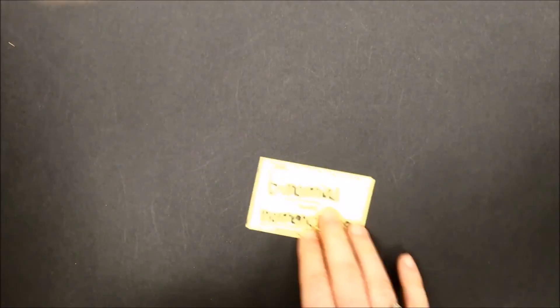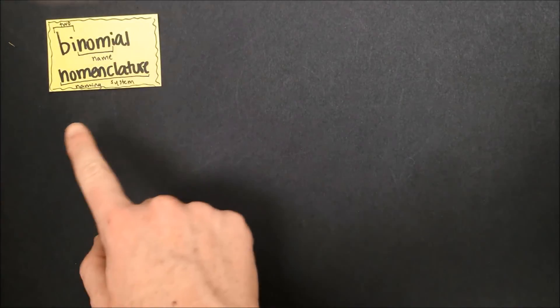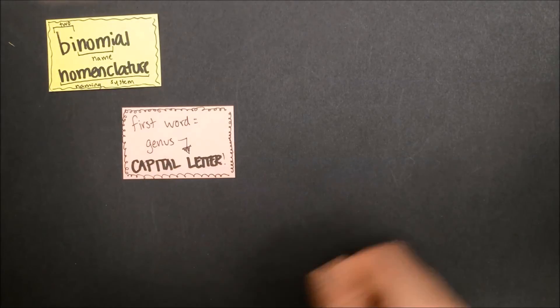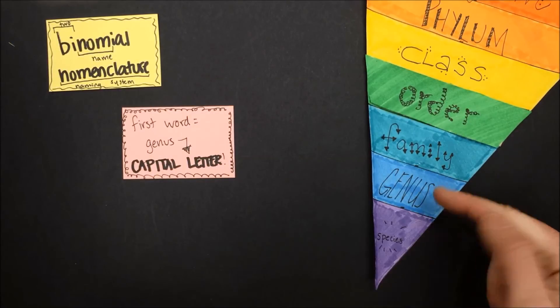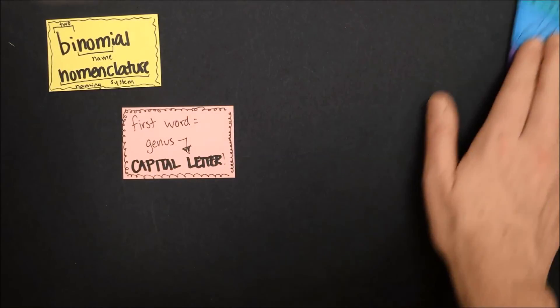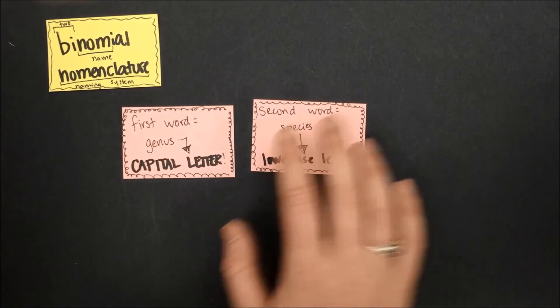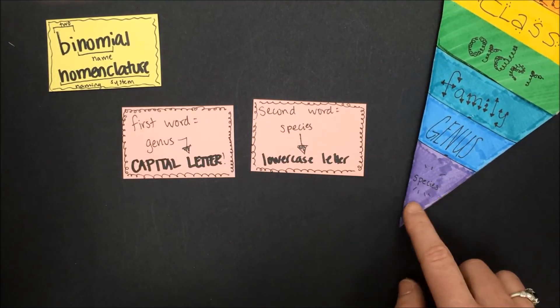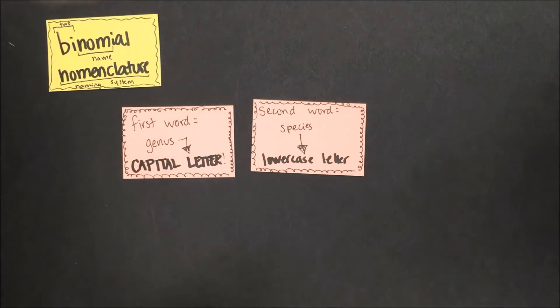In our system of binomial nomenclature, which means two-name naming system: the first word is the name of the organism's genus, the second most specific level of organization, always written with a capital letter to start. The second word is the species name, our most specific taxon, always written with a lowercase letter. The last rule is that it's written in italics.